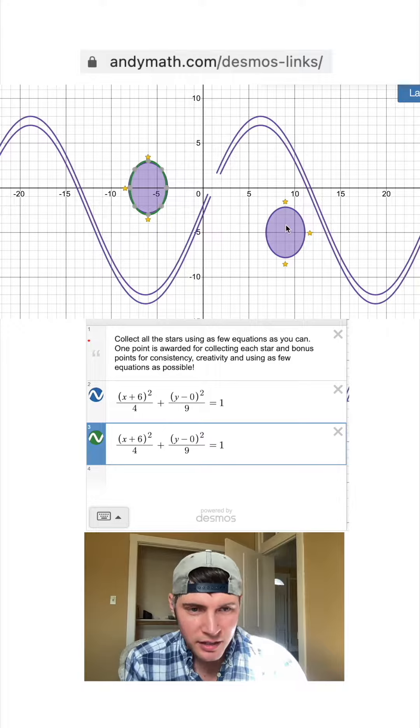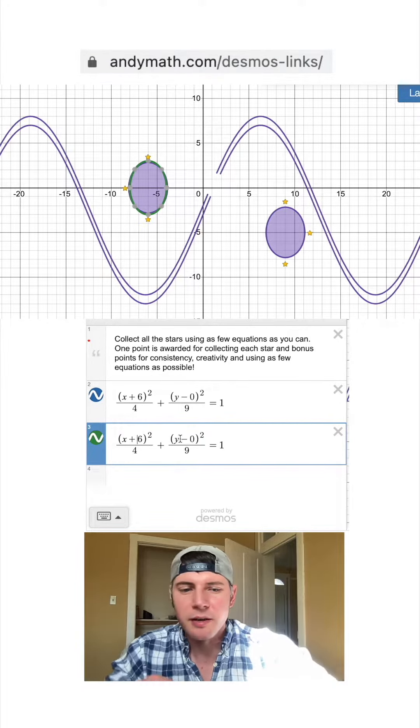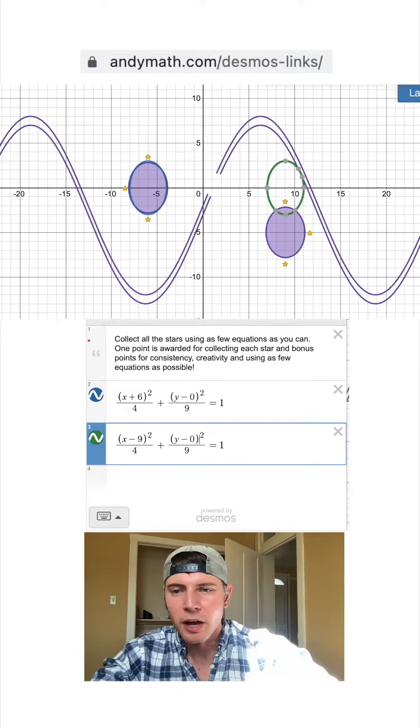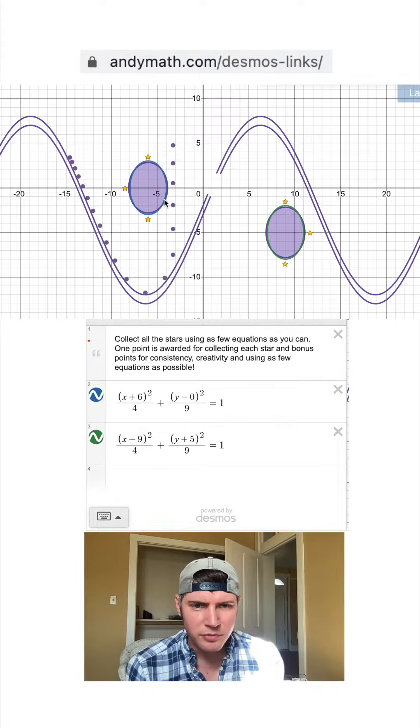Then to get the other ellipse, I'll copy this formula. Its center is at (9, -5), so we'll say -9 and then in the y we'll say +5. And now we're exactly right there. The marbles drop right here.